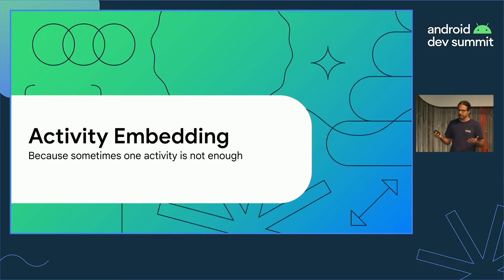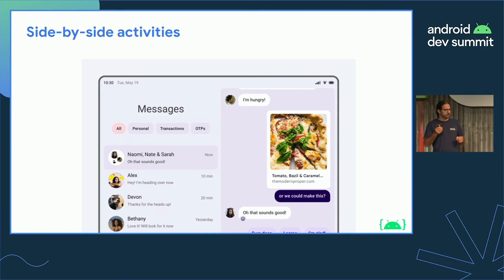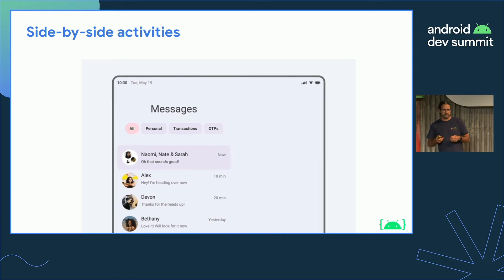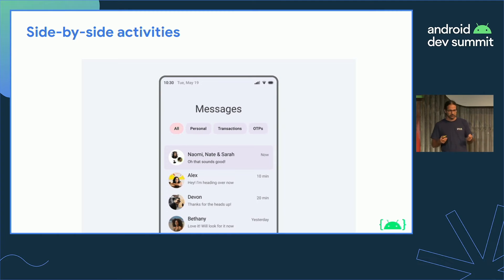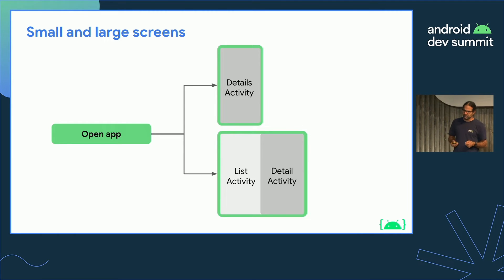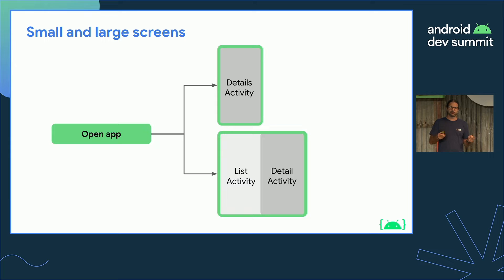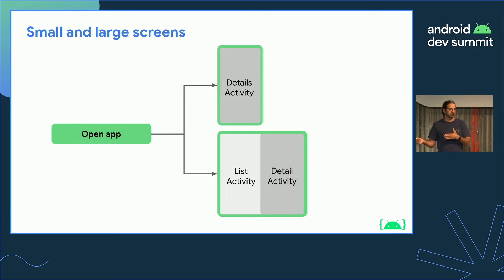We've seen how a user can run two apps at the same time, where each app has one activity being displayed. Now I want to talk about a different scenario where, as developers, we want to show two activities in our app — and this is where activity embedding is really useful. Activity embedding allows you to display two activities side by side, which is great if you want to implement a list-detail layout with minimum or even zero code refactoring. Activity embedding will automatically choose the right presentation based on the available screen size and the configuration you provide, meaning you don't need to branch your code to handle small and large screens. In other words, there is no isTablet boolean — forget about that.